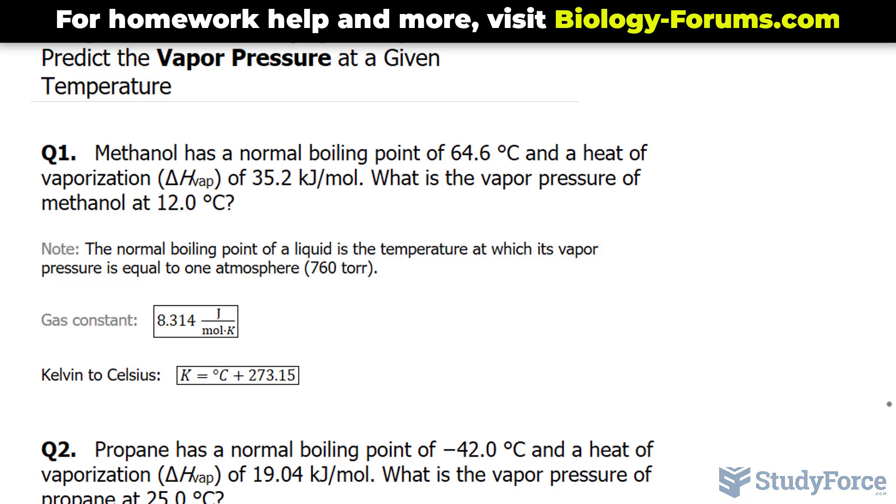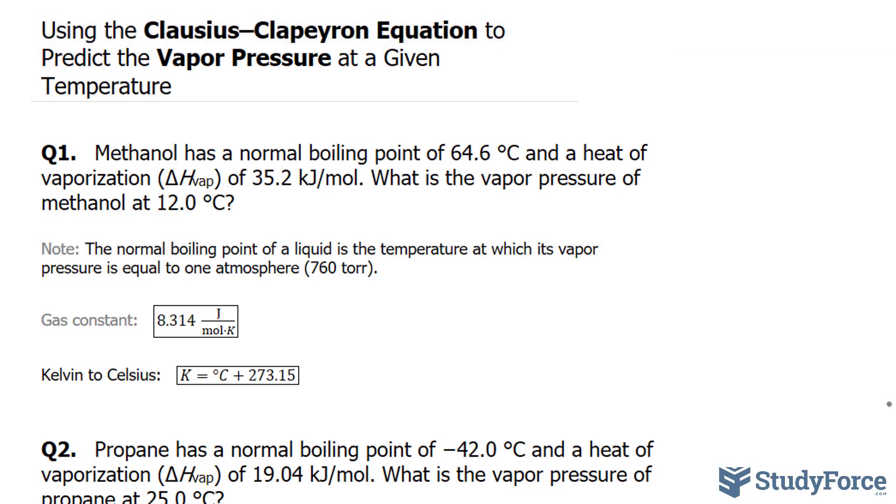Now, if you don't know already, the Clausius-Clapeyron equation is a linear equation that relates temperature and pressure. All linear equations have the formula y equals mx plus b, where m represents the slope and b represents the y-intercept.